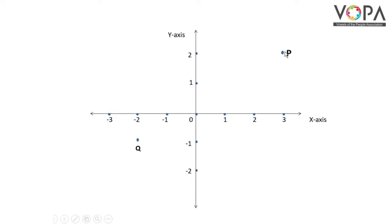The position of point P and Q can be determined by their distance from both axes, X-axis as well as Y-axis.